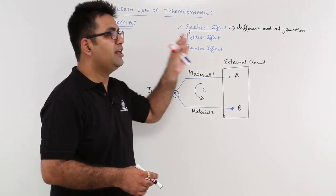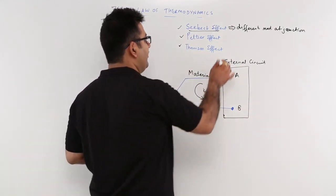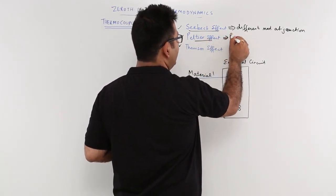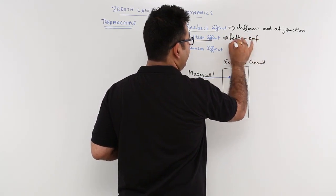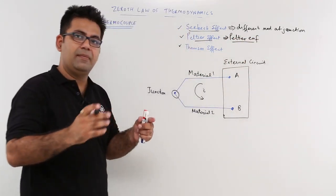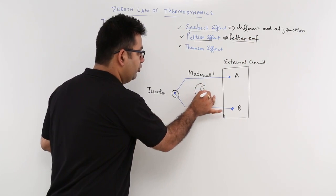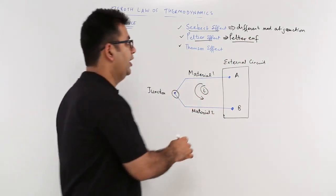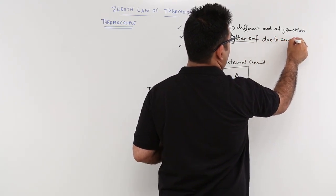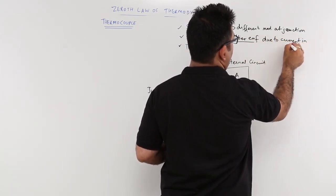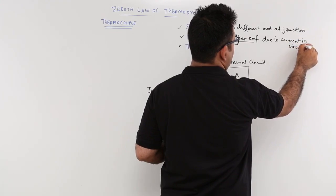The second is the Peltier effect. Peltier effect basically creates a Peltier EMF. Peltier EMF is generated due to the flow of current in the circuit. So this is due to current in the circuit.